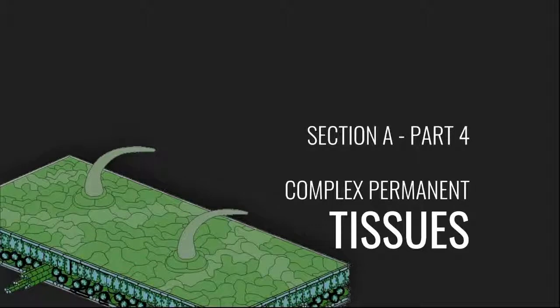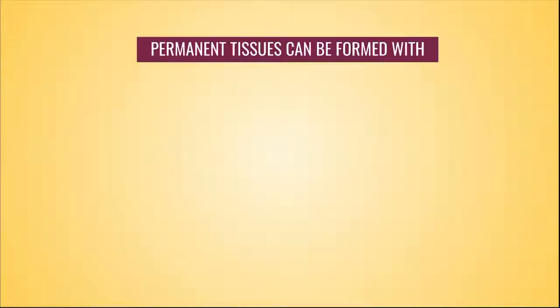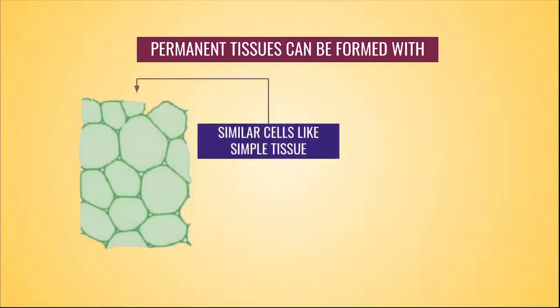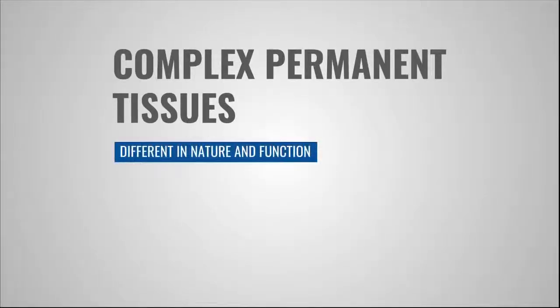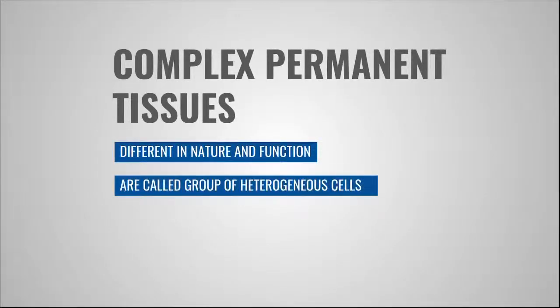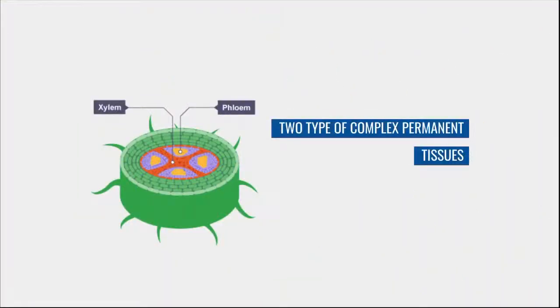Now let's quickly discuss complex tissues. In our previous video, we understood that permanent tissues can be made of similar types of tissues known as simple permanent tissue — those tissues are groups of homogeneous cells. Similarly, there are also a few kinds of permanent tissues formed with different types of cells. These tissues are heterogeneous in nature and are called complex permanent tissues. There are two types of complex permanent tissues: xylem and phloem.